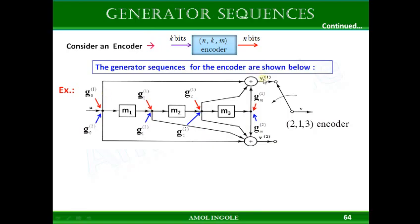If you see output 1 of this encoder, it can be derived by XORing the current message bit with the bit stored in M2 and with the bit stored in M3. So by XORing these three, you will get output 1 of this encoder. The bit stored in M1 is not considered in XORing because there is no connection from M1 to the adder module.